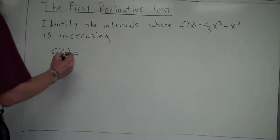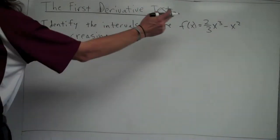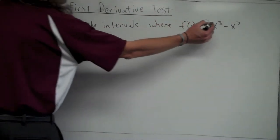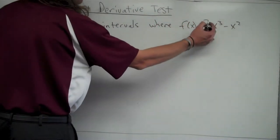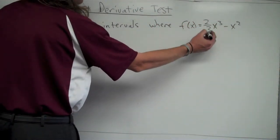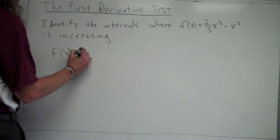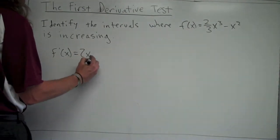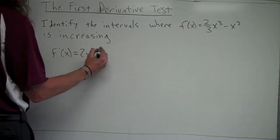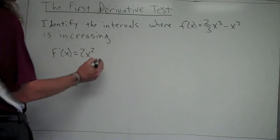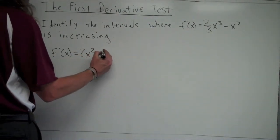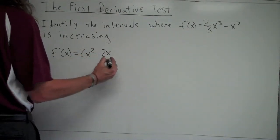So let's go ahead and find f prime. To find the derivative, I bring the three down in front — that cancels the three on the bottom — so I end up with two x squared, because I subtract one from the exponent, minus two x.